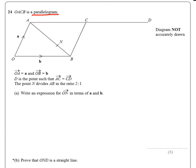O to A is equal to a, and O to B is equal to the vector b. D is the point such that A to C is equal to C to D, so both of those are the same length. The point N divides AB in a ratio of 2 to 1.